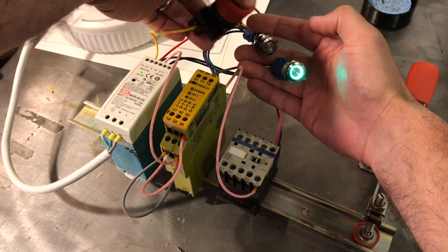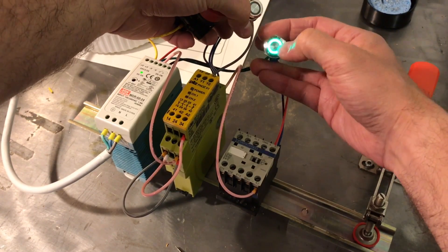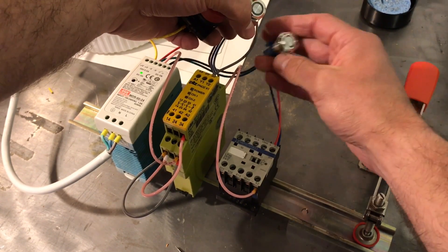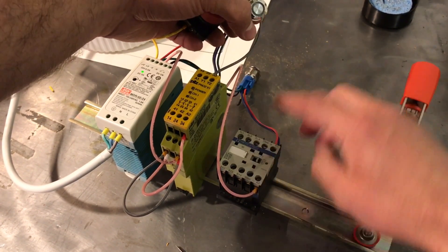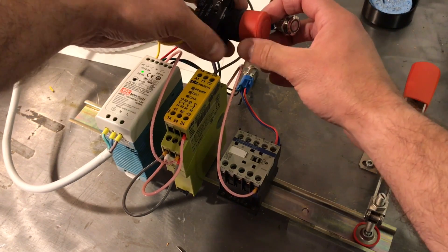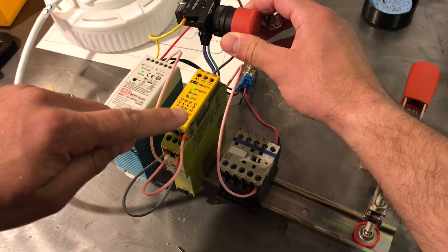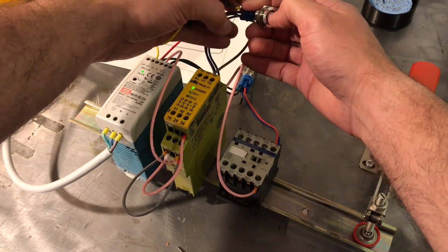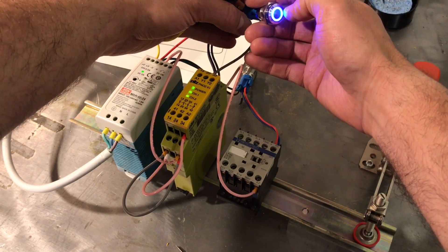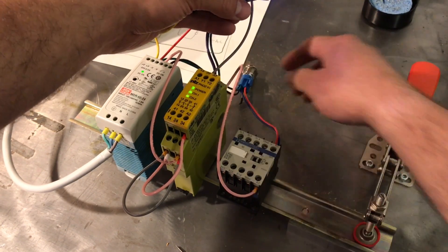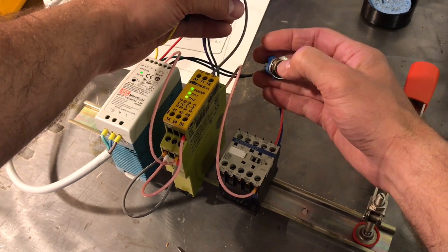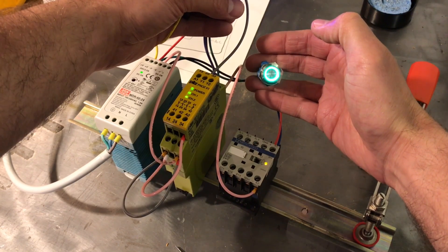Press the e-stop, you can turn this one off so that it won't come on when it's reset. Twist this, power comes on to the Pilz. Press the reset button, this is all ready to go, then turn on the power to the contactor.